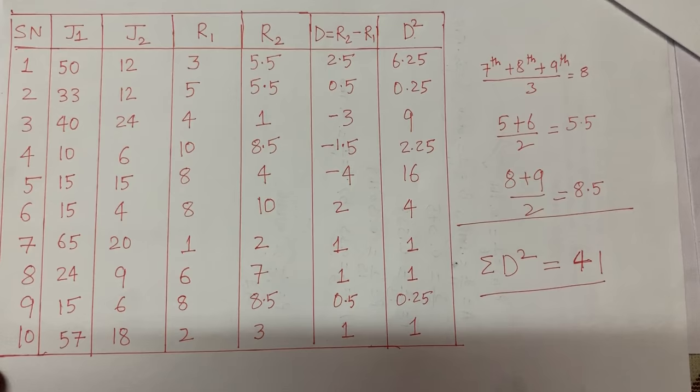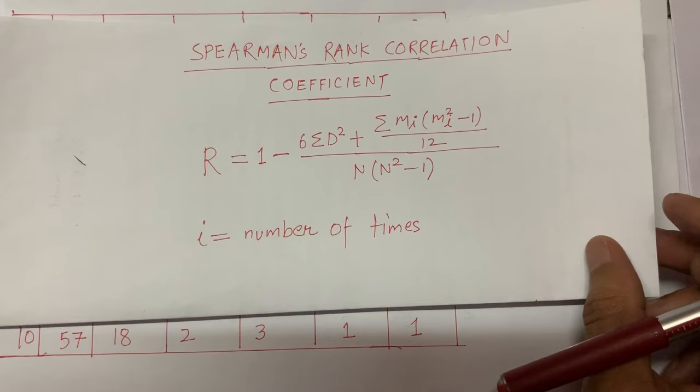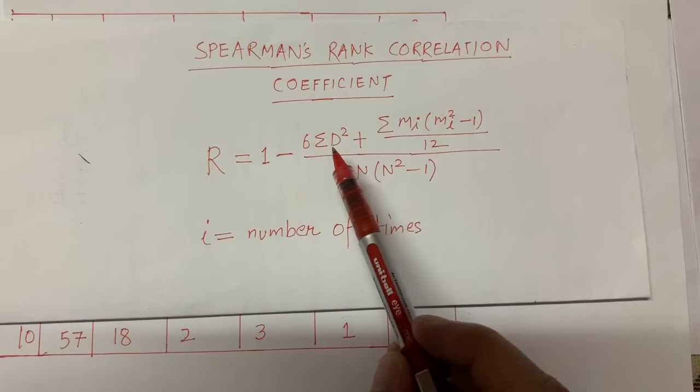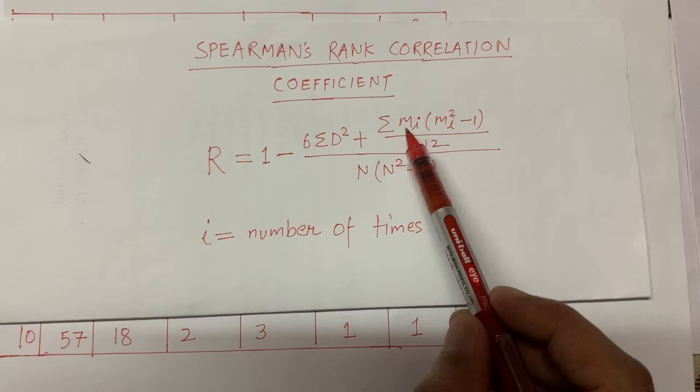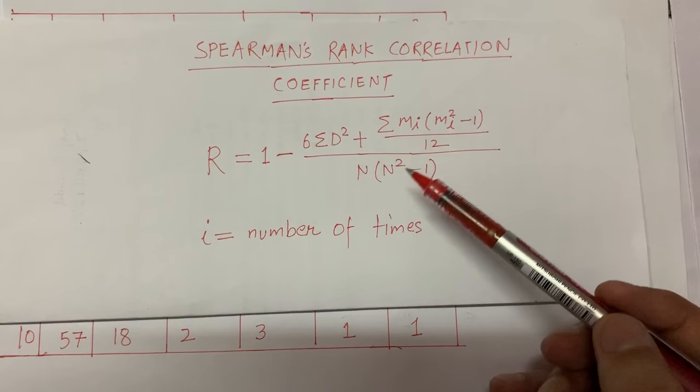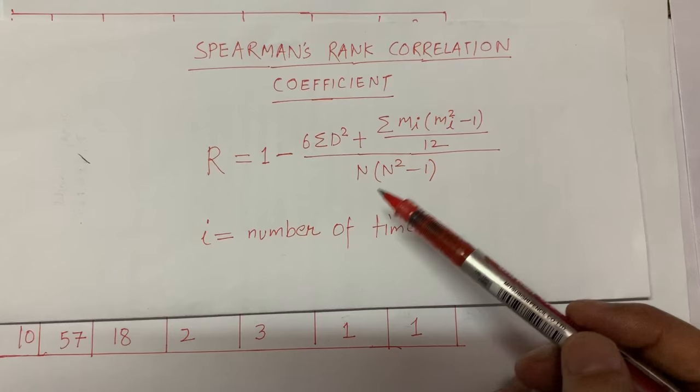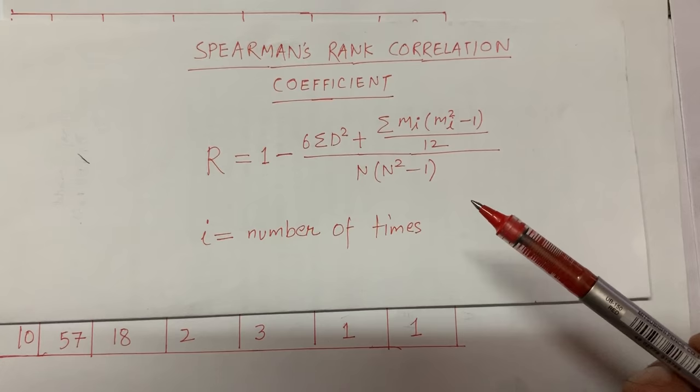I'll use that in the formula. The formula to calculate Spearman's rank correlation is r = 1 minus 6 times [sum of d² plus a correction term for ties], divided by n(n²−1). The summation of d² is 41. The catch here is the variable m, which represents how many values are tied up in a particular standoff.